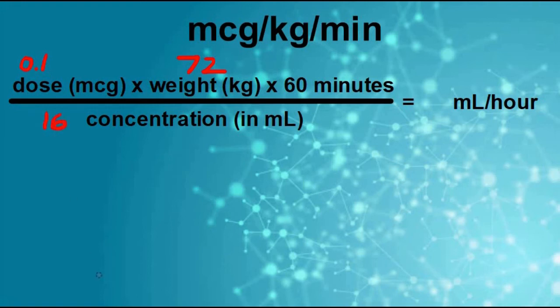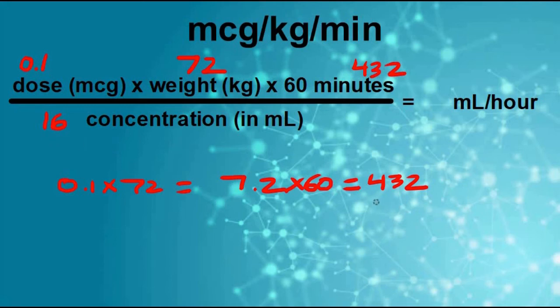You can go ahead and press pause here and do the math yourself and see if your pump setting is going to match mine. Let's work our way through the formula. So 0.1 times 72 is 7.2. Now we have to multiply by 60. 7.2 times 60 equals 432. So this top number is 432 divided by the concentration, which is 16. 432 divided by 16 equals, did you come up with 27 milliliters per hour?